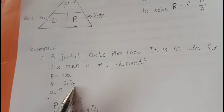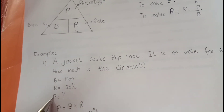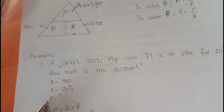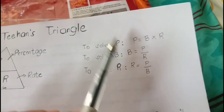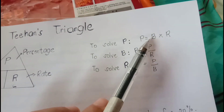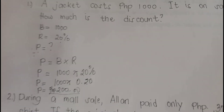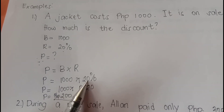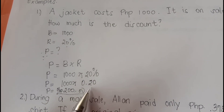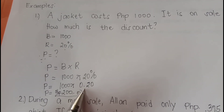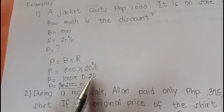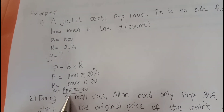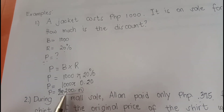We need to solve the discount, or the percentage. In order to get the percentage, we're gonna multiply the base and the rate. P is equal to 1,000 times 20%. 20% in decimal will become 0.20. Multiply by 1,000 — it will become 200 pesos. Therefore, the discount is 200 pesos.